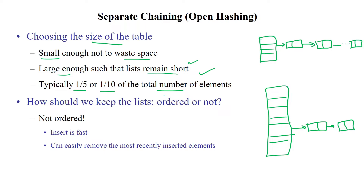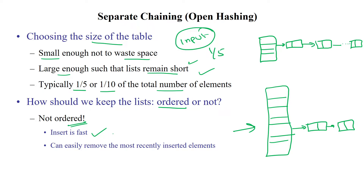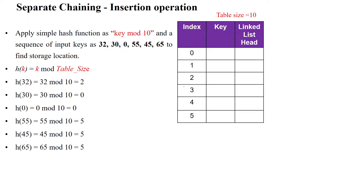Typically, we can select one-fifth or one-tenth of the total number of input elements as the number of buckets in the hash table. The keys do not need to be in sorted order. It allows inserting data quickly and also easily removing data by accessing the index and comparing values in each linked list memory location.